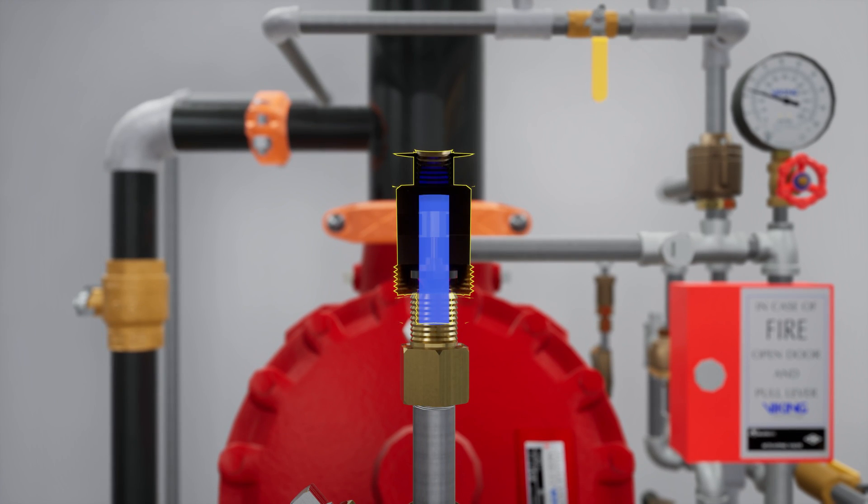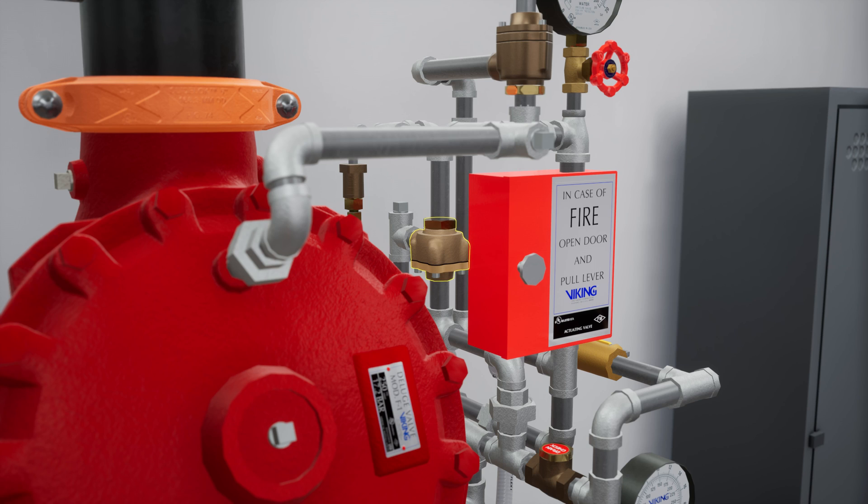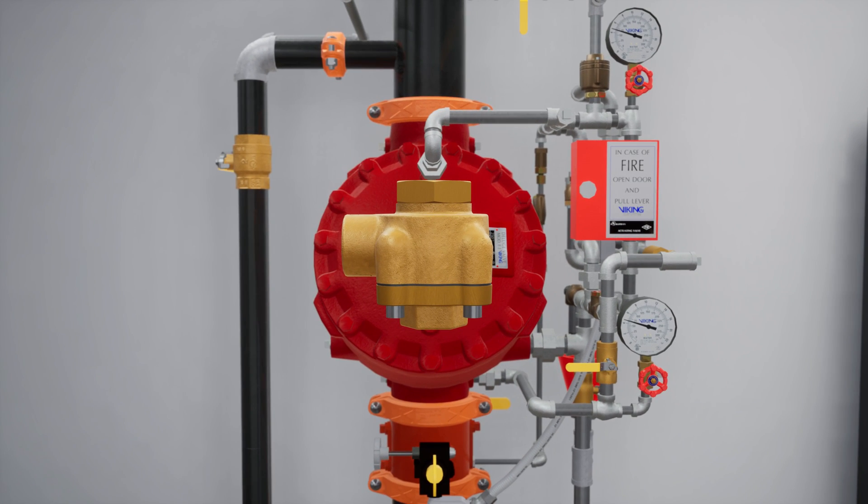The check valve only permits water to enter the priming chamber, allowing prime chamber pressure to be maintained. Following the trim off the prime chamber is the pressure-operated relief valve, or PORV. The PORV is a device that ensures the valve remains in an open state while water is flowing through the valve.